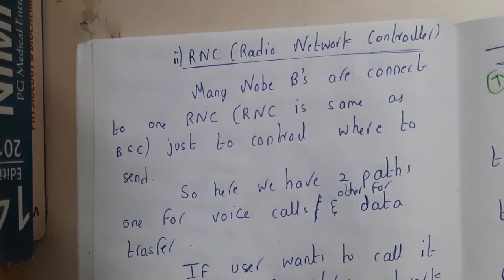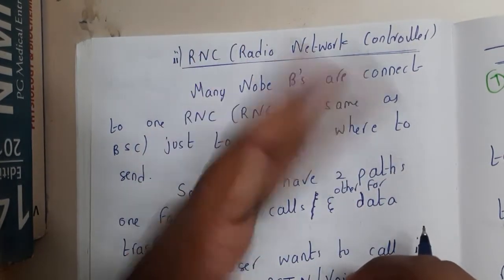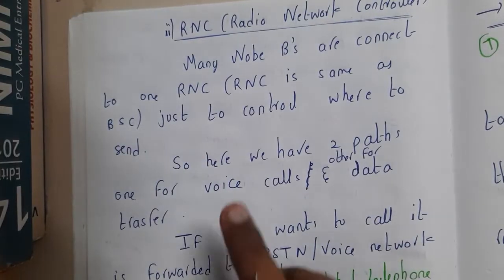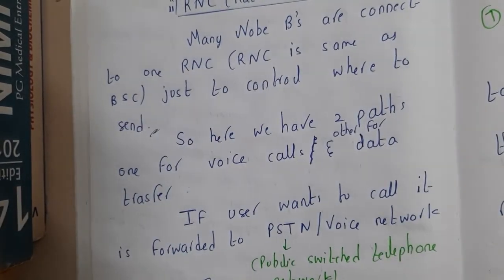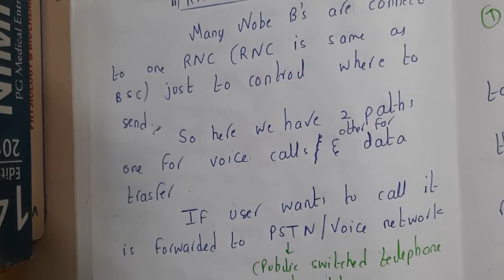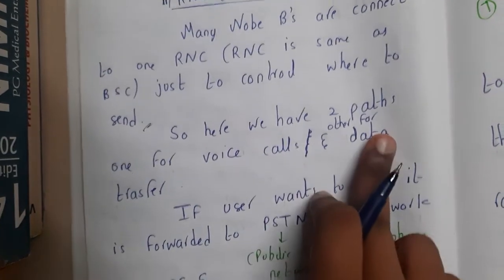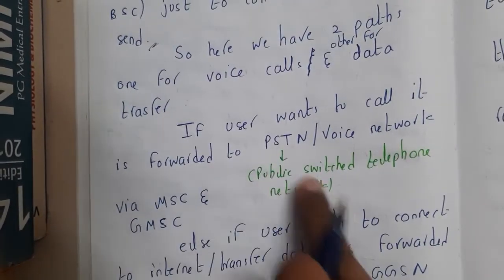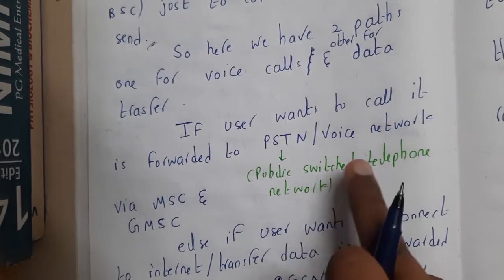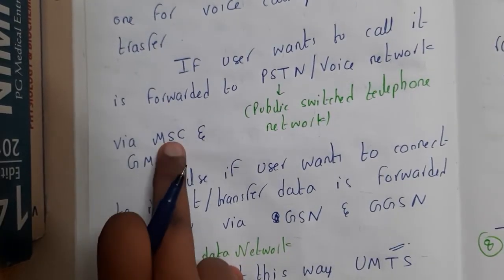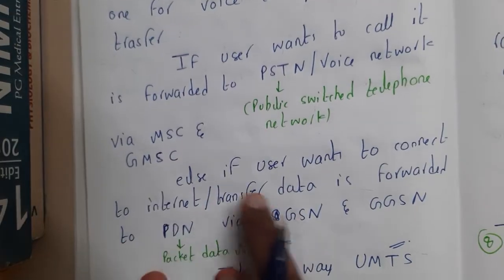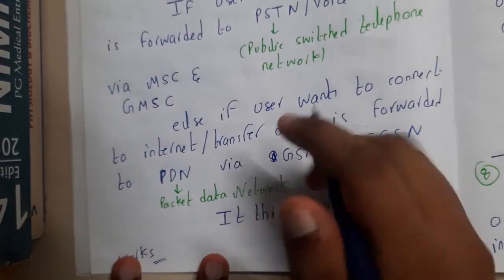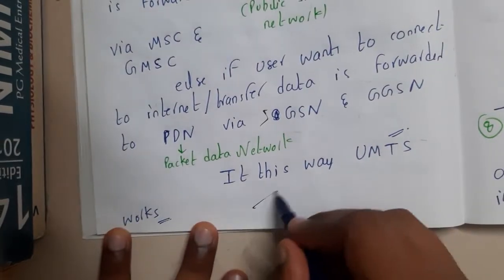Node B is similar to the BTS of GSM and helps in the transfer and reception of data. RNC is the controller that decides which path data should take — either a call or a data transfer. Many Node B's are connected to one RNC. There are two paths: for a voice call it is forwarded to the PSTN via MSC, and for data or internet it is forwarded to the PDN via SGSN and GGSN.